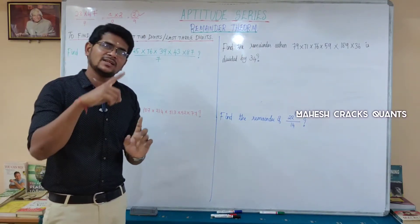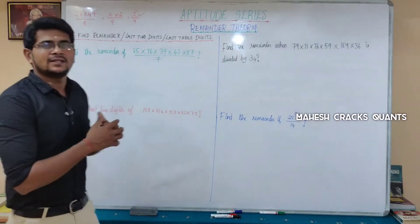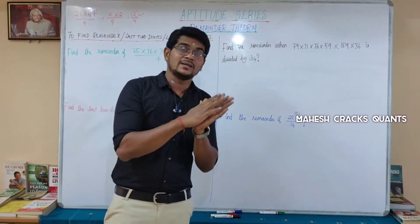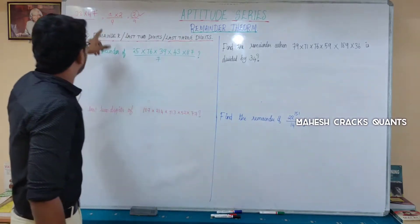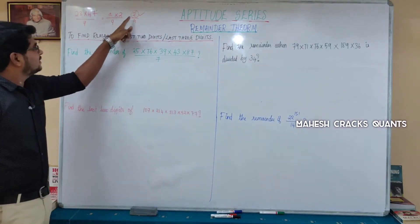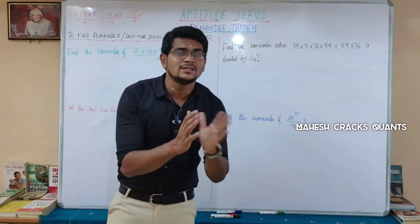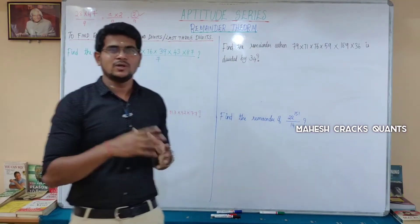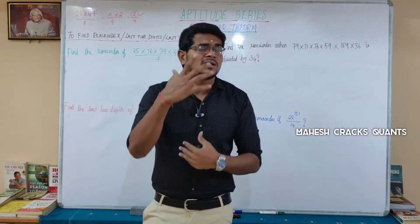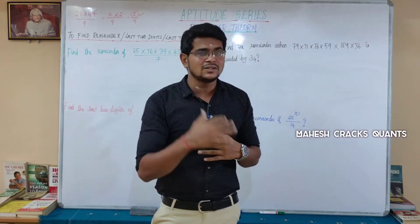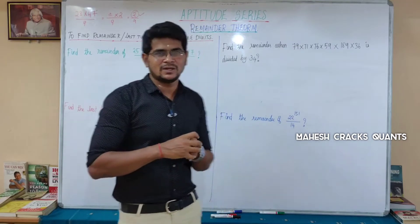3 times of 9 is 27, remainder 1. Then 47 divided by 9 is remainder 2. So 1 into 2 divided by 2 is remainder 2. We can calculate this as remainder 2. In terms of this, there is a concept of negative remainder.